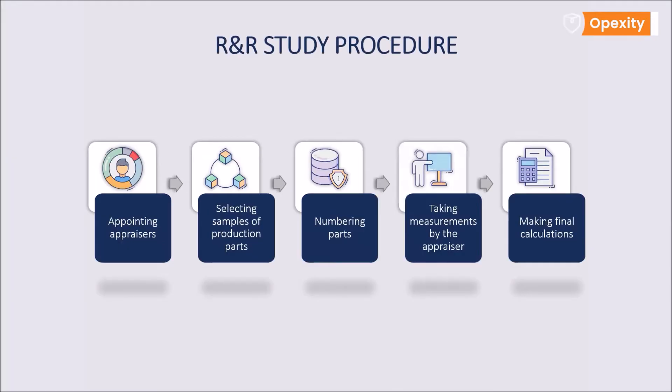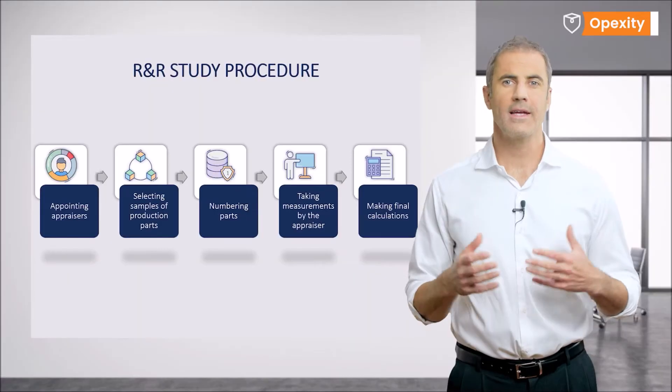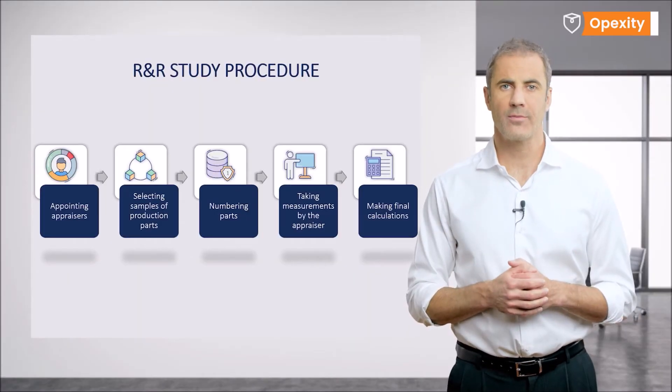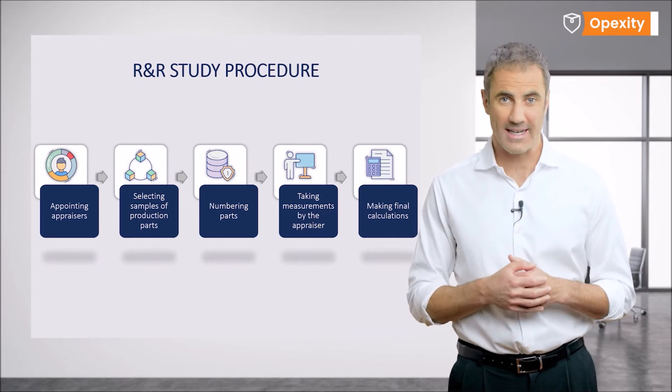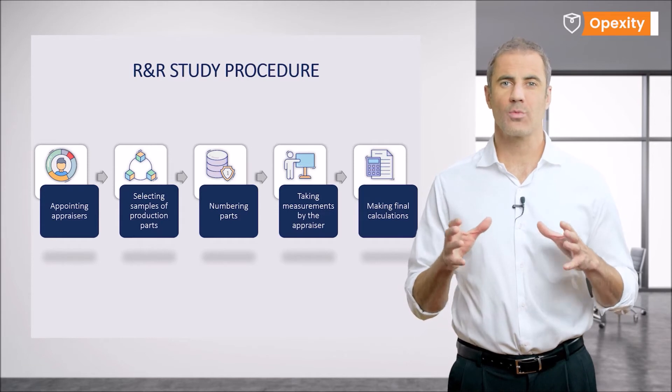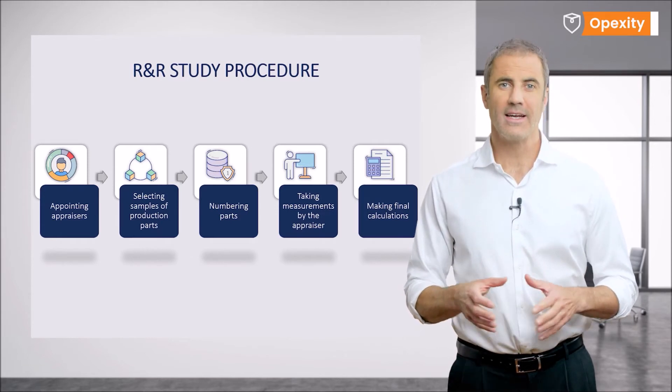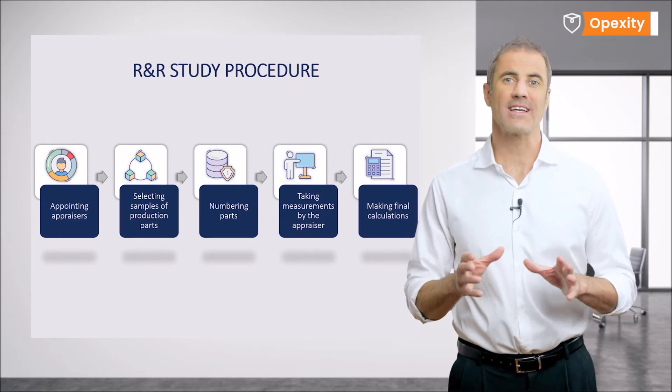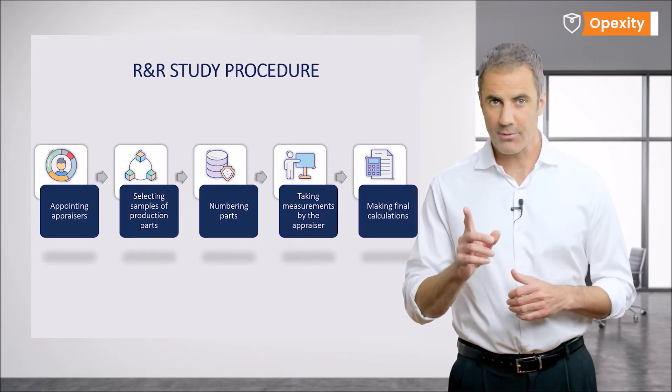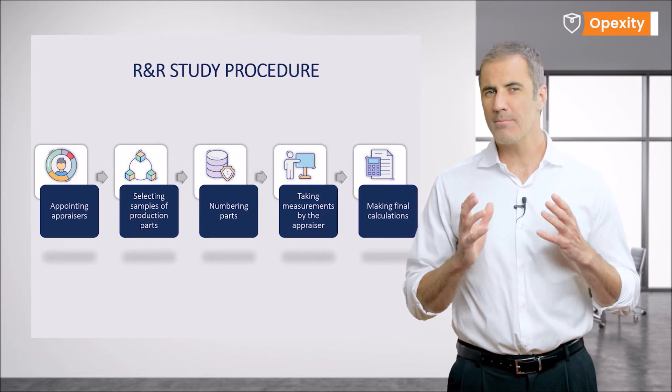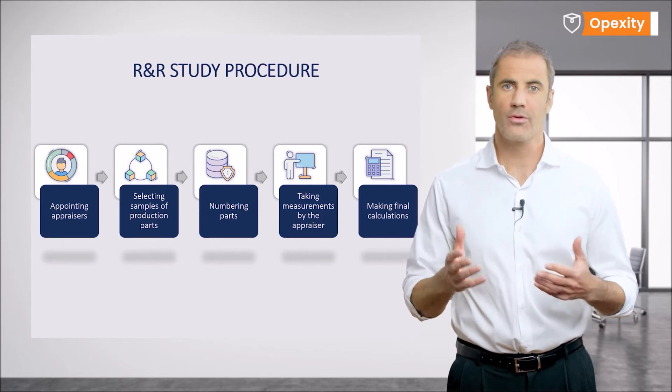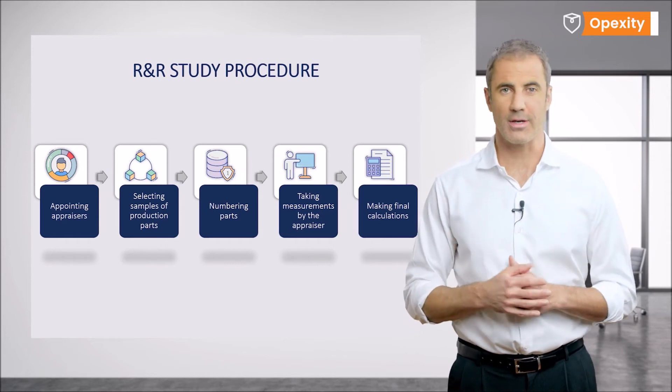Then, in taking the measurements, the process is carried out under the supervision of the study leader. In order to ensure that we account for the variability of the measurement that results from its way of performance and the method selected, we can't take just one measurement. It is usually recommended to conduct at least two tests for each piece, separately by each appraiser. In most cases, there are two, three or four tests conducted, usually three.